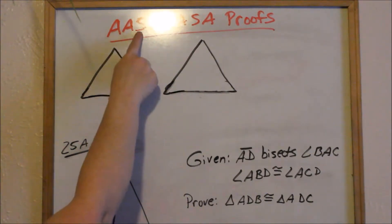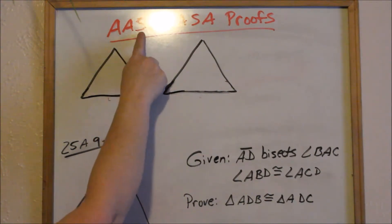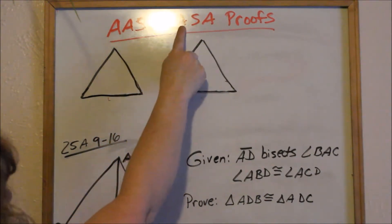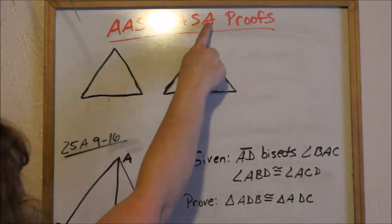AAS means angle, angle, side. ASA means angle, side, angle.